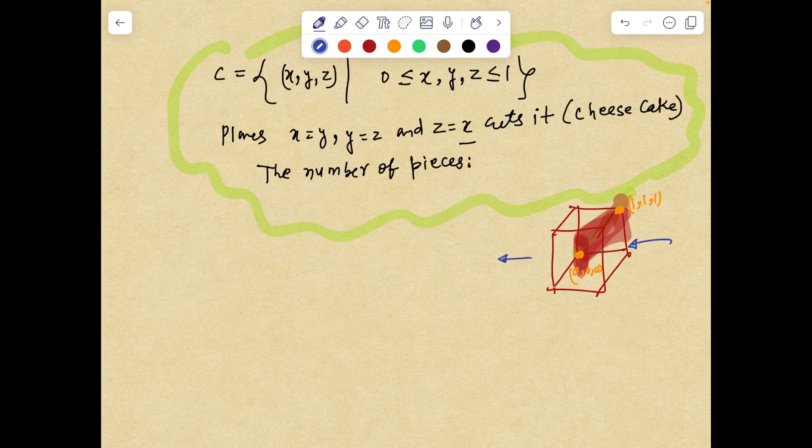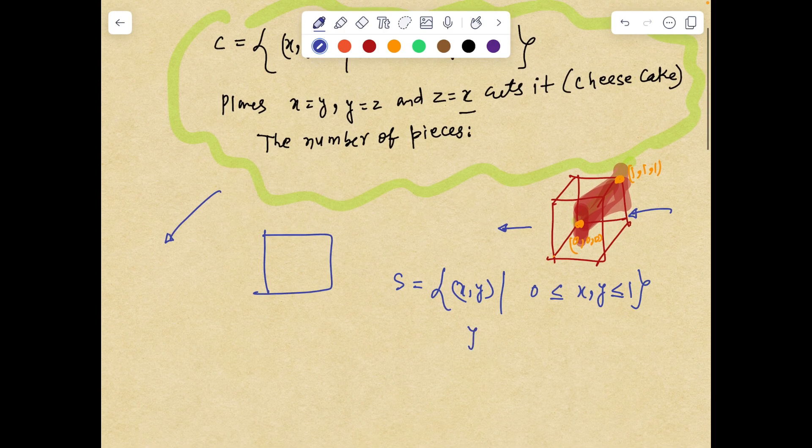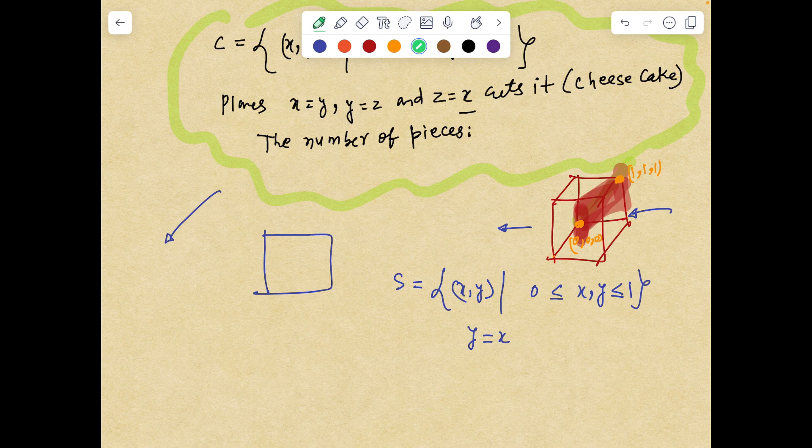So what we can realize is let me pose a simpler problem. Let us say we have a square S given by the set 0 ≤ x,y ≤ 1, and if I cut this square along a line y equals x, in how many pieces can the cut be made? Very simple problem: clearly the answer is 2. We have line y equals x. We have one region over here and another region over here.